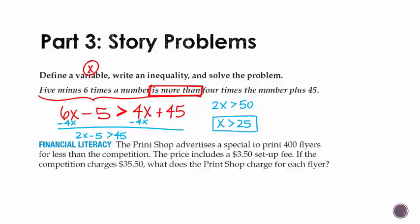So let's do another one. The print shop advertises a special to print 400 flyers for less than the competition. The price includes a $3.50 setup fee. The competition charges $35.50. What does the print shop charge for each flyer? So we don't know what they charge for each flyer. That's what we're going to make x. That's our variable. If they have to make 400 of them, I'm going to multiply 400 times x. The price includes a setup fee of $3.50. That means no matter what, I have to charge you $3.50. The key here for the inequality is that we need to charge less than the competition. So we are going to charge less than $35.50.